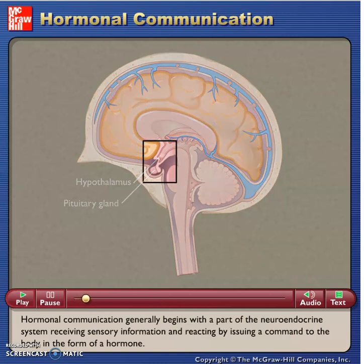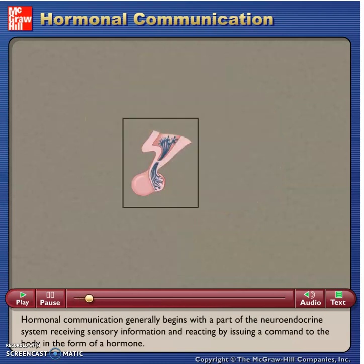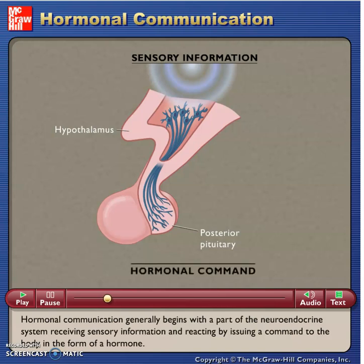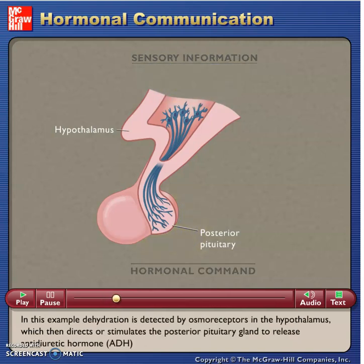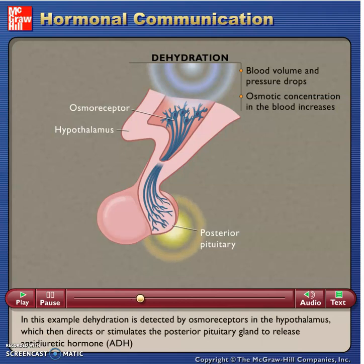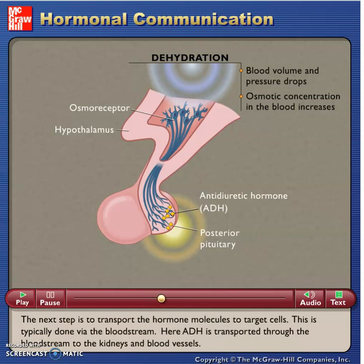Hormonal communication generally begins with a part of the neuroendocrine system receiving sensory information and reacting by issuing a command to the body in the form of a hormone. In this example, dehydration is detected by osmoreceptors in the hypothalamus, which then directs or stimulates the posterior pituitary gland to release antidiuretic hormone, ADH.